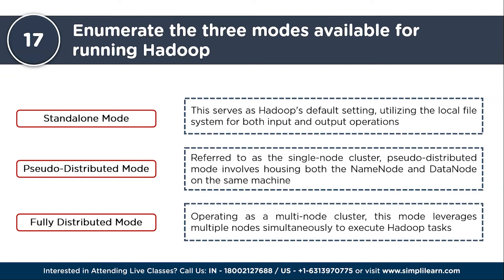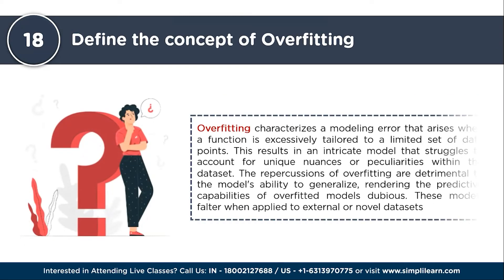The next question: define the concept of overfitting. Overfitting characterizes a modeling error that arises when a function is excessively tailored to a limited set of data points, resulting in an intricate model that struggles to account for unique nuances within the dataset. These models falter when applied to external or novel datasets. Within machine learning, overfitting ranks among the most prevalent challenges — a model falls into this category when it excels on the training dataset but performs poorly on the test dataset. Strategies to avoid overfitting include cross-validation, pruning, early stopping, regularization, and ensemble techniques.